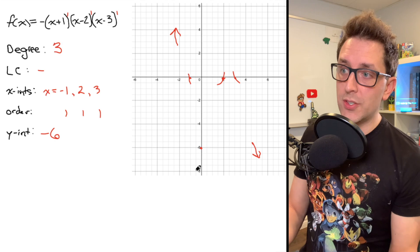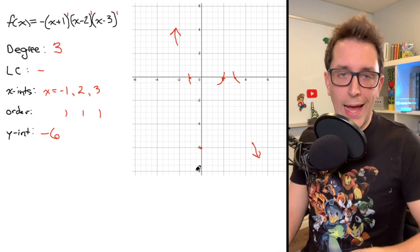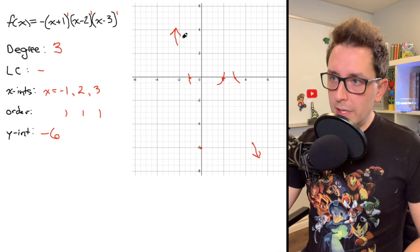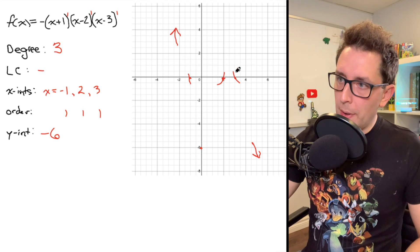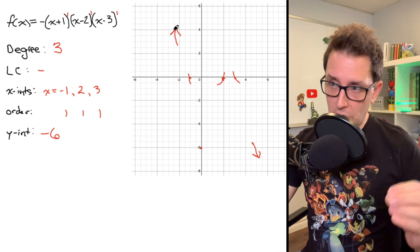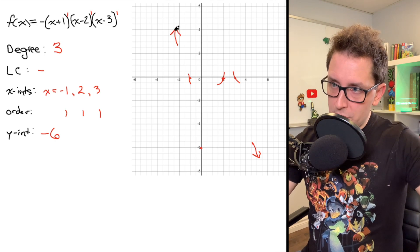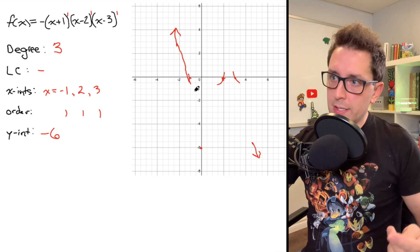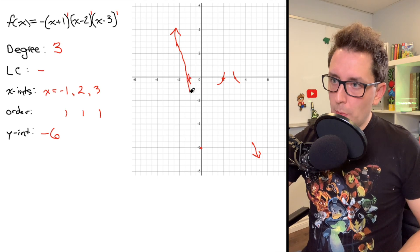And at this point, we have all the information we need to create a relatively accurate sketch of what this polynomial is going to look like. And to create that sketch, all I really need to do is sort of connect all of these pieces of information that I've put on my graph.